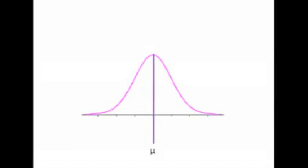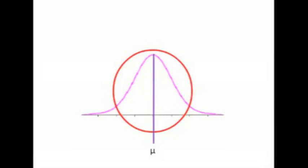Mu exactly divides the distribution in half. A big red circle appears, intended to indicate that most of the data congregate around mu. Out on the far left we have some extremes, and out on the far right we have some extremes.